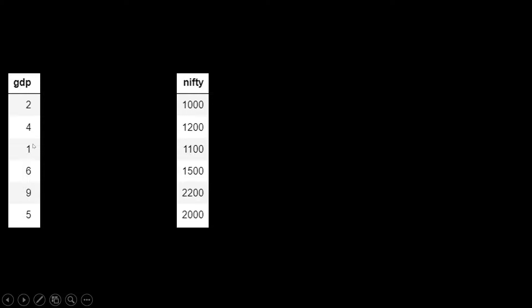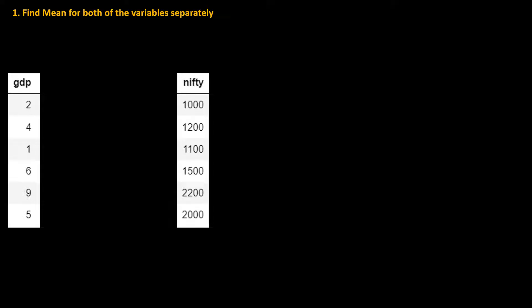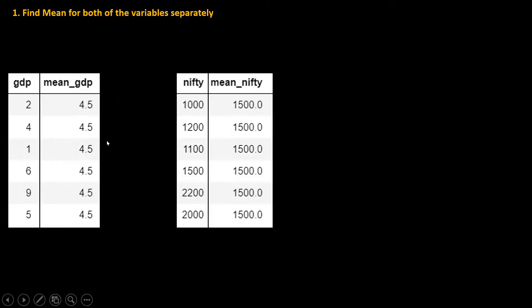Here we have both variables — GDP, which is gross domestic product, and Nifty. This is a sample of five observations, but we will consider this as the whole population. To find the covariance, the first step is to find the mean for both of these two variables.